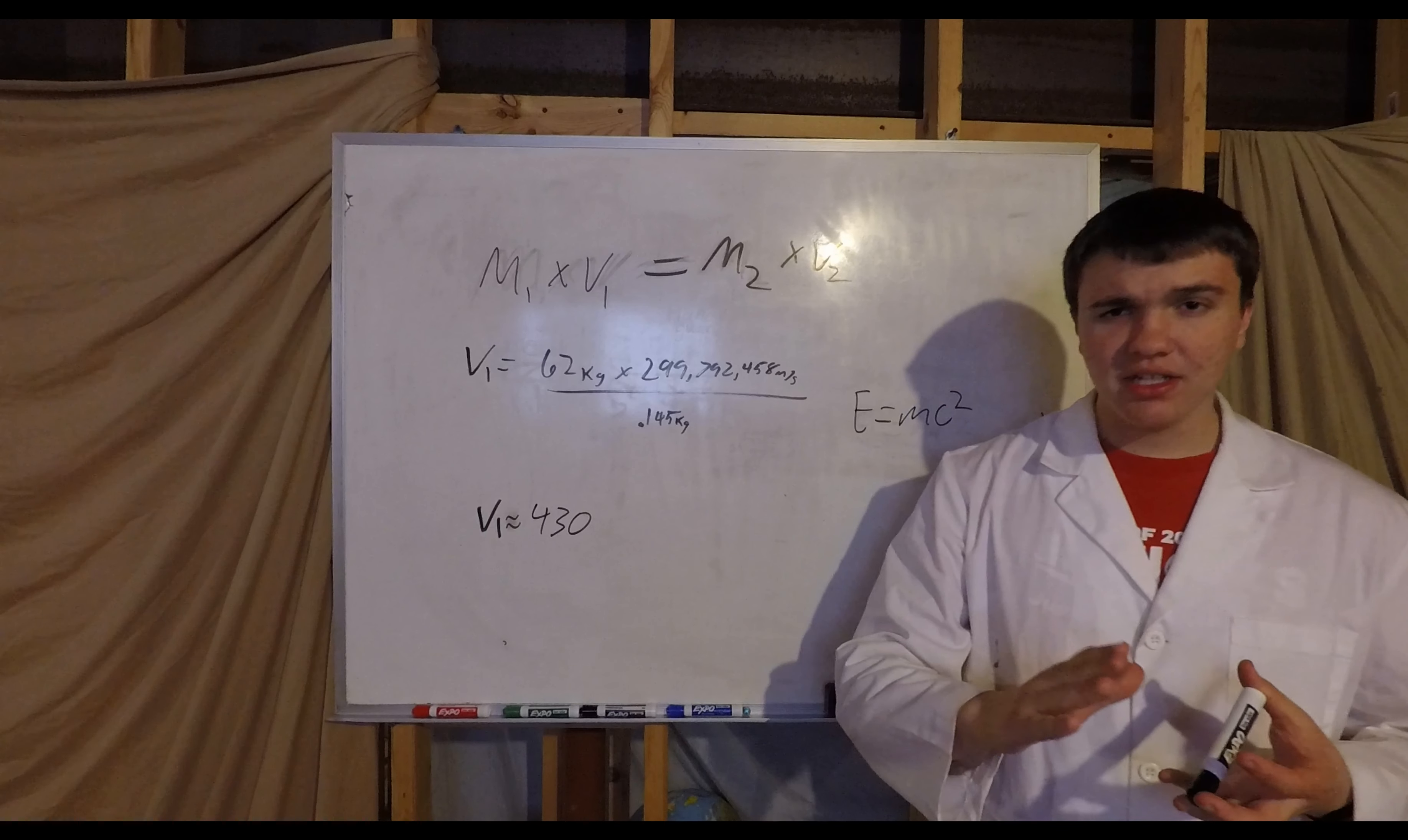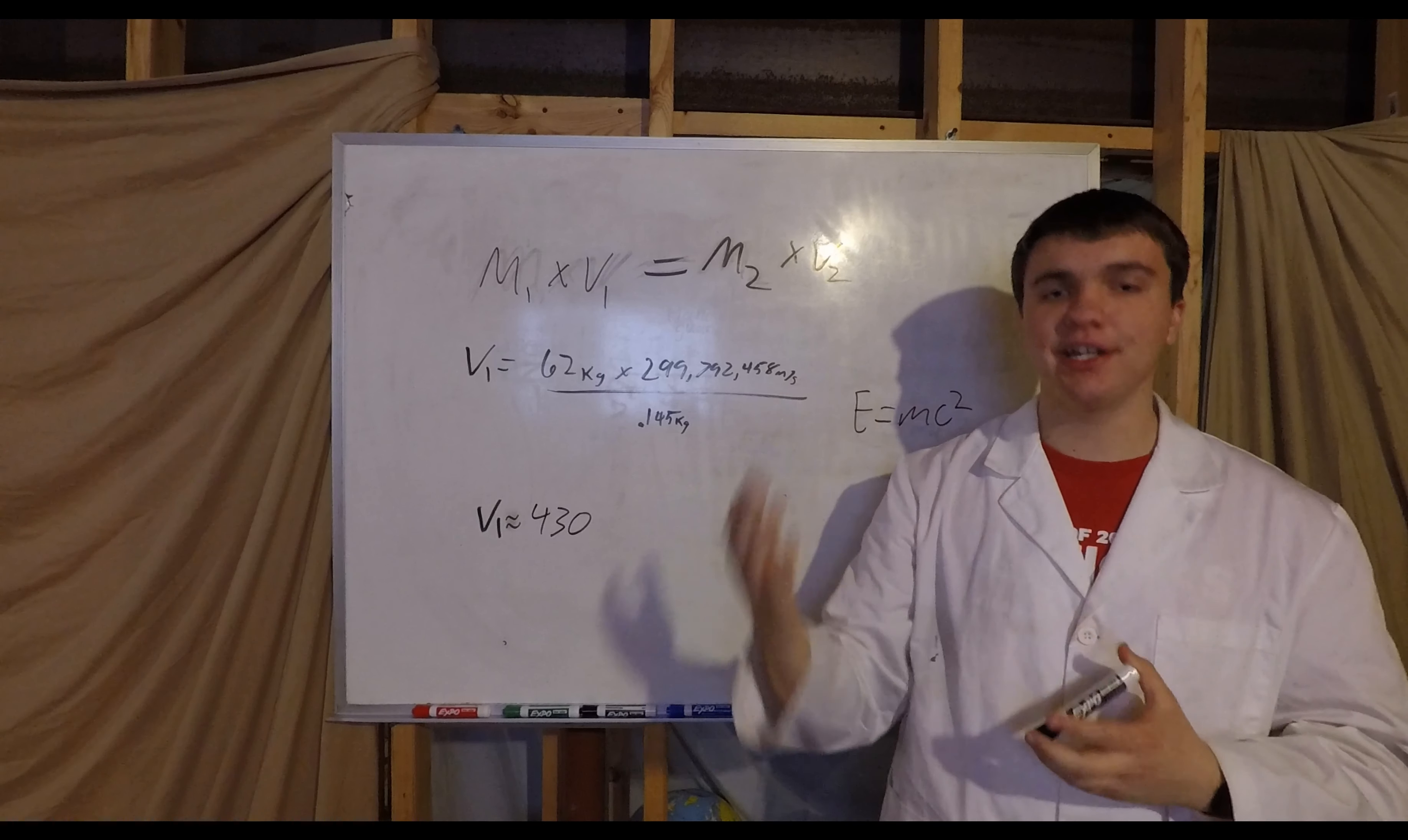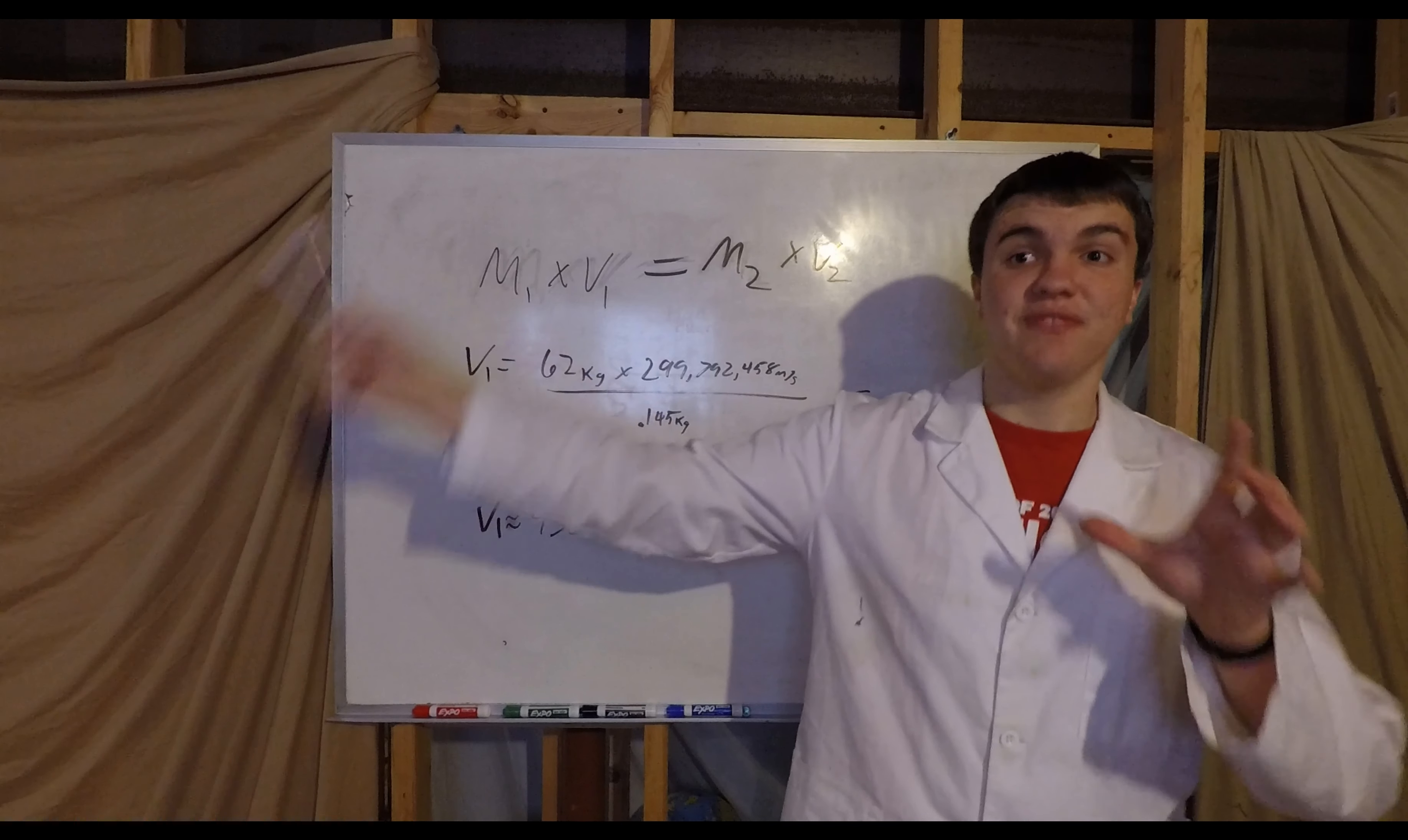Basically, as V approaches C, the speed of light, it's going to make this fraction undefined. Therefore, gamma approaches infinity. And because of the way things multiply, take something times infinity, you get infinity.